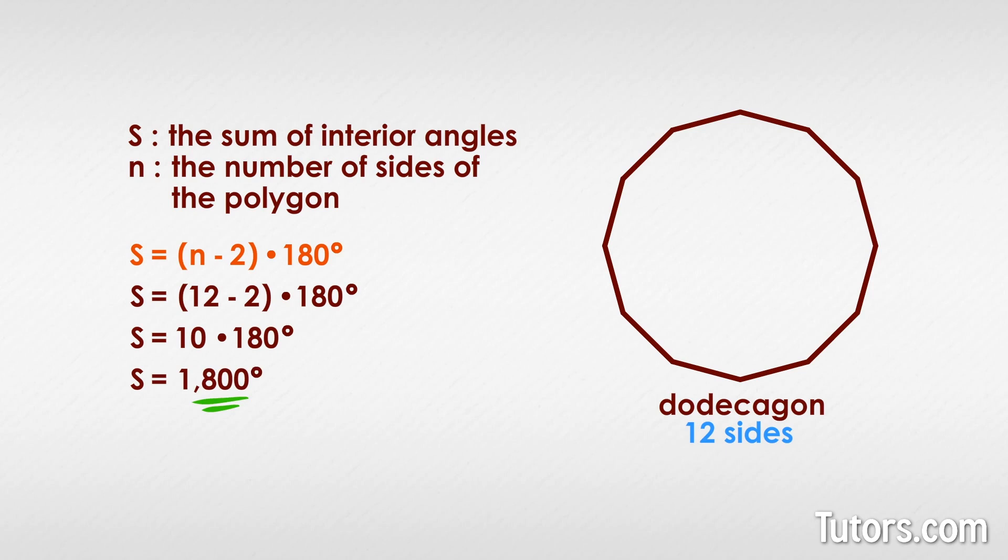Take any dodecagon and pick one vertex. Connect every other vertex to that one with a straight edge, dividing the space into 10 triangles. 10 triangles, each 180 degrees, makes a total of 1800 degrees.